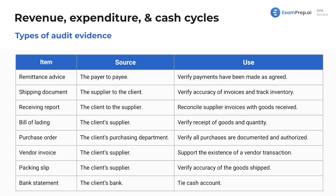Let's talk about types of audit evidence. We talked about this in the audit evidence lesson, but it never hurts to talk about it again, specifically because in this lesson we're talking about a lot of different testing methods. Those actual substantive testing procedures we do are going to have a lot to do with these particular documents and pieces of evidence.